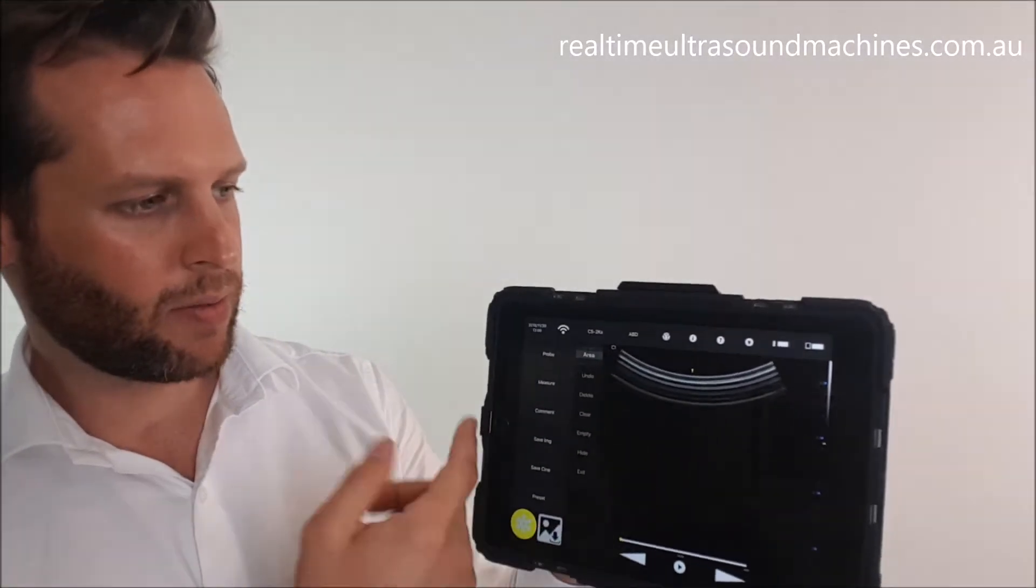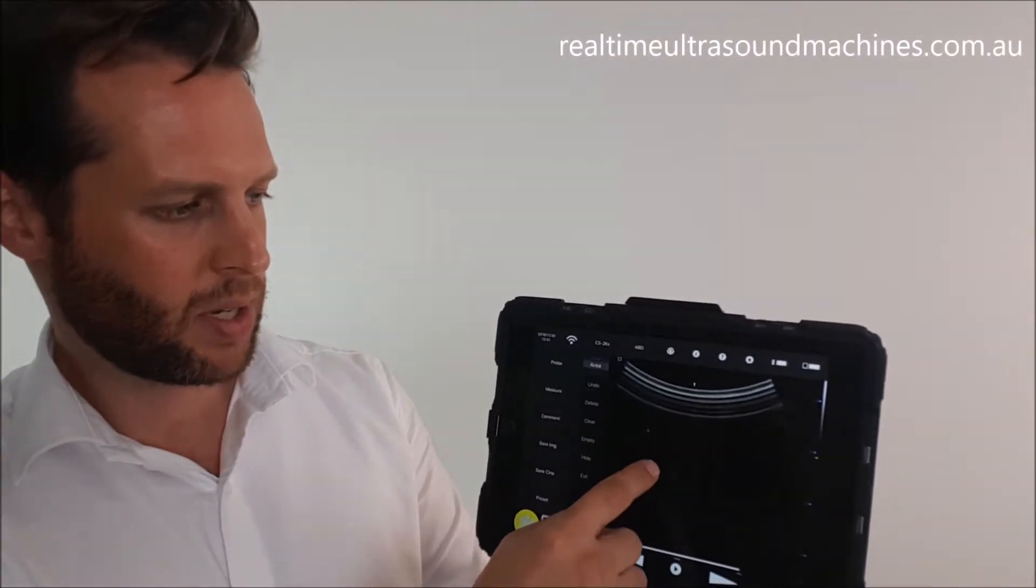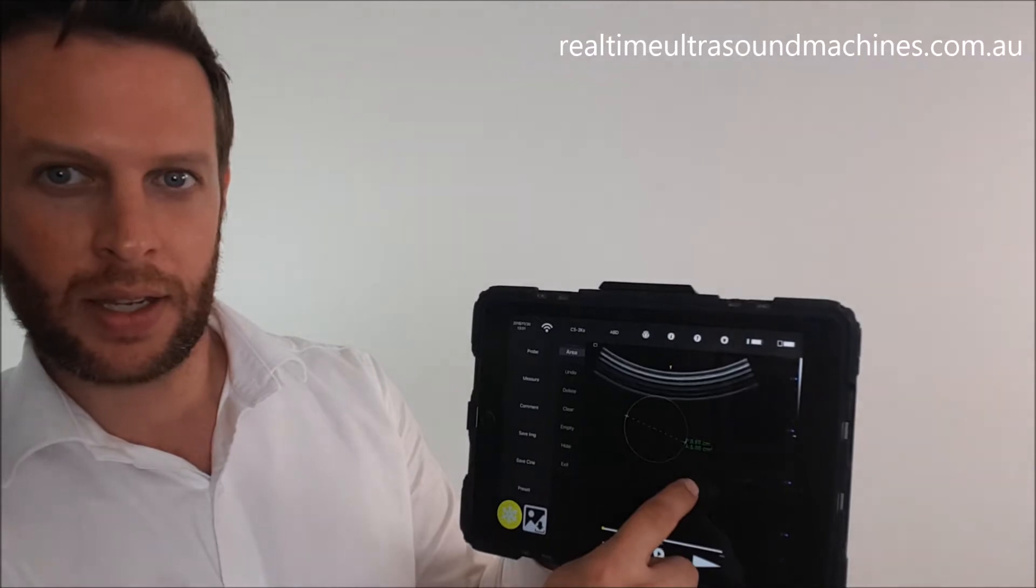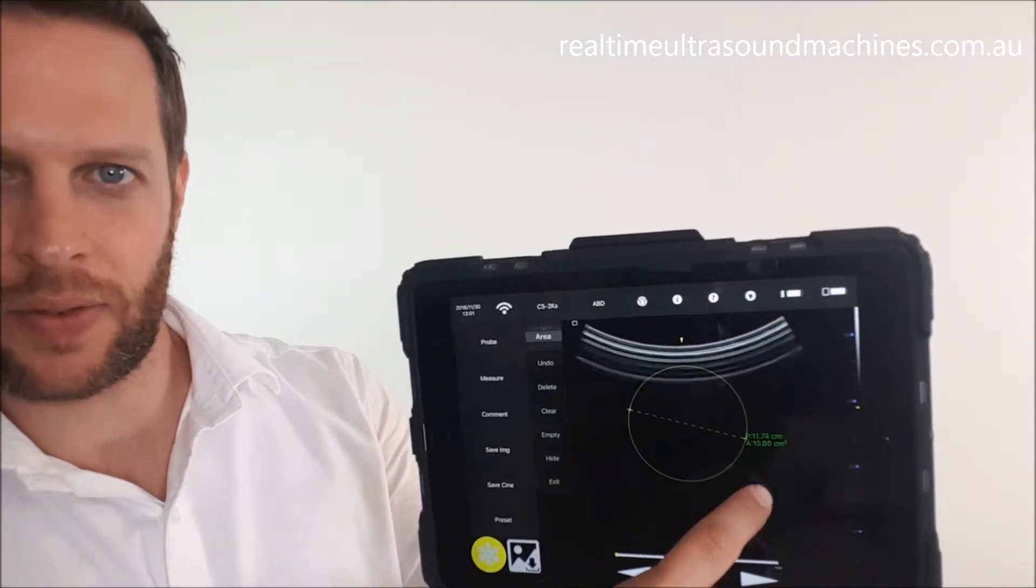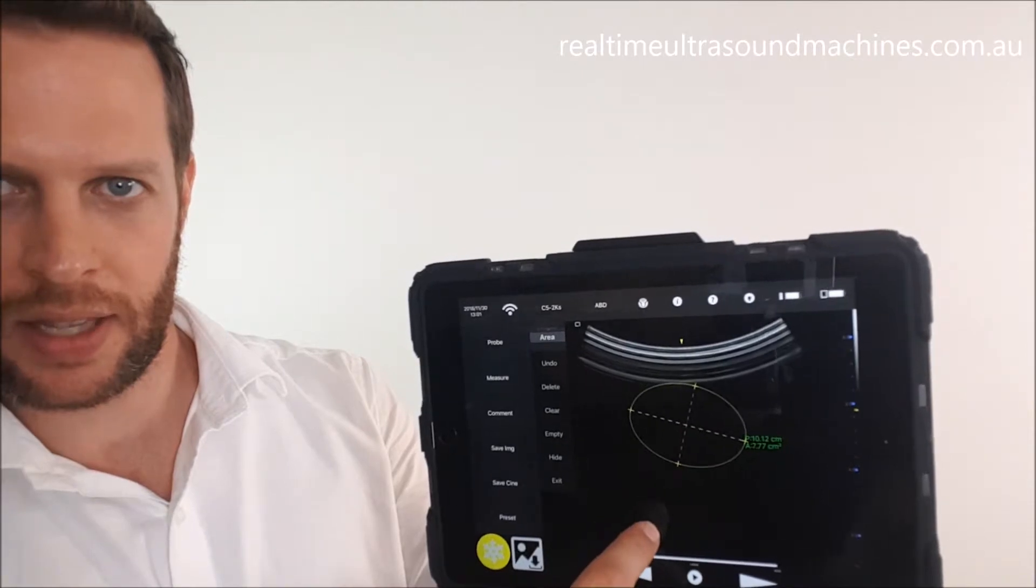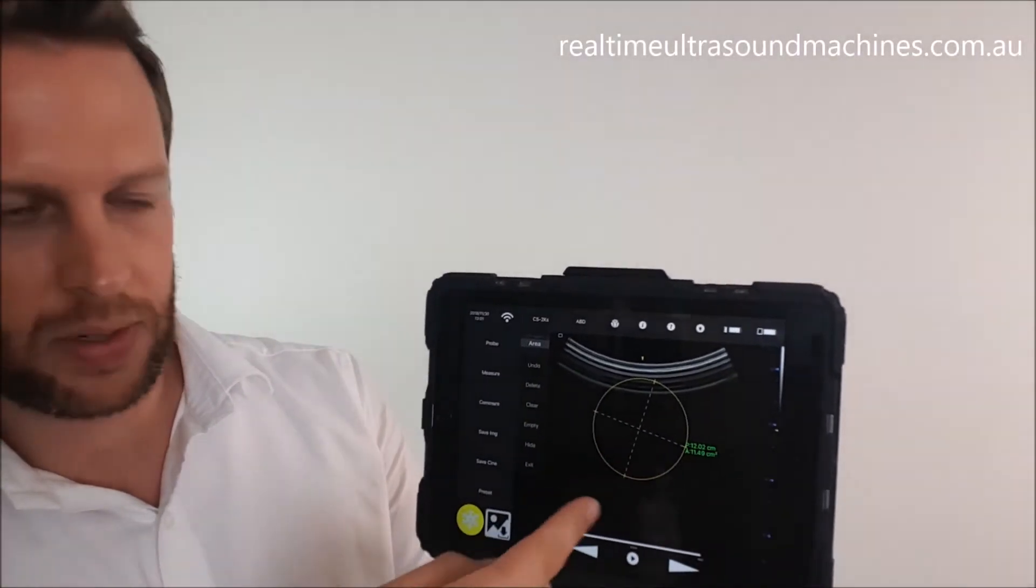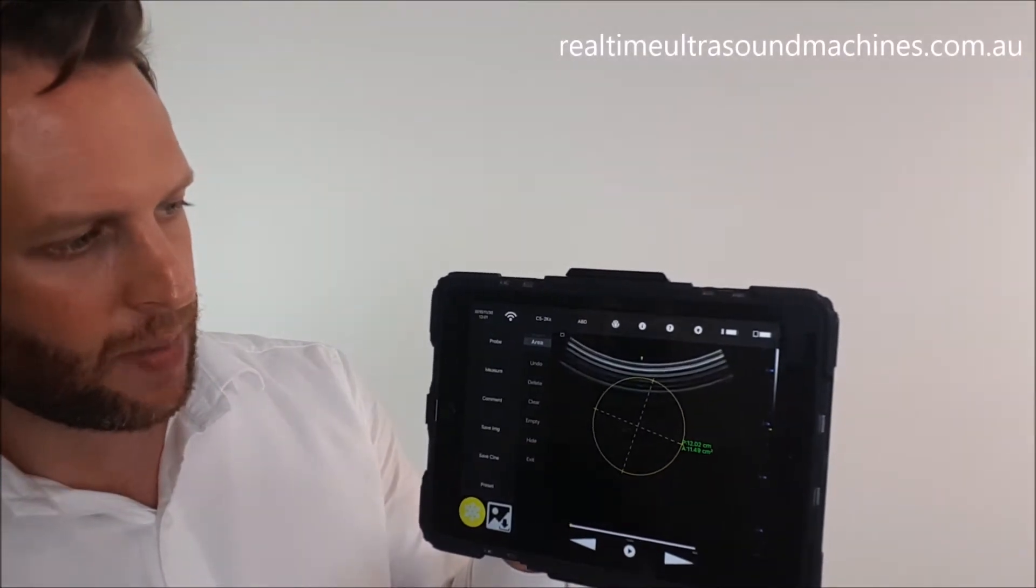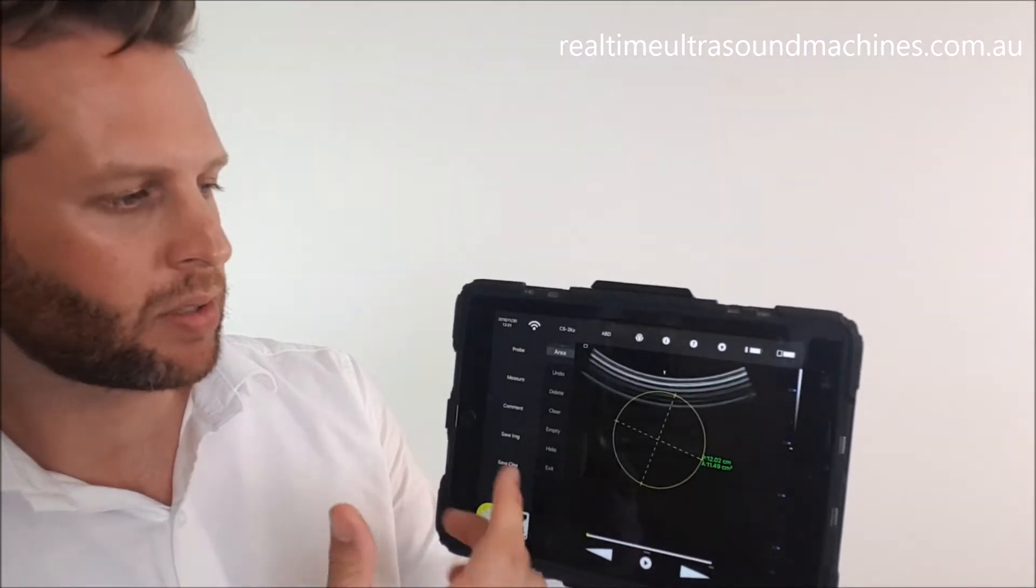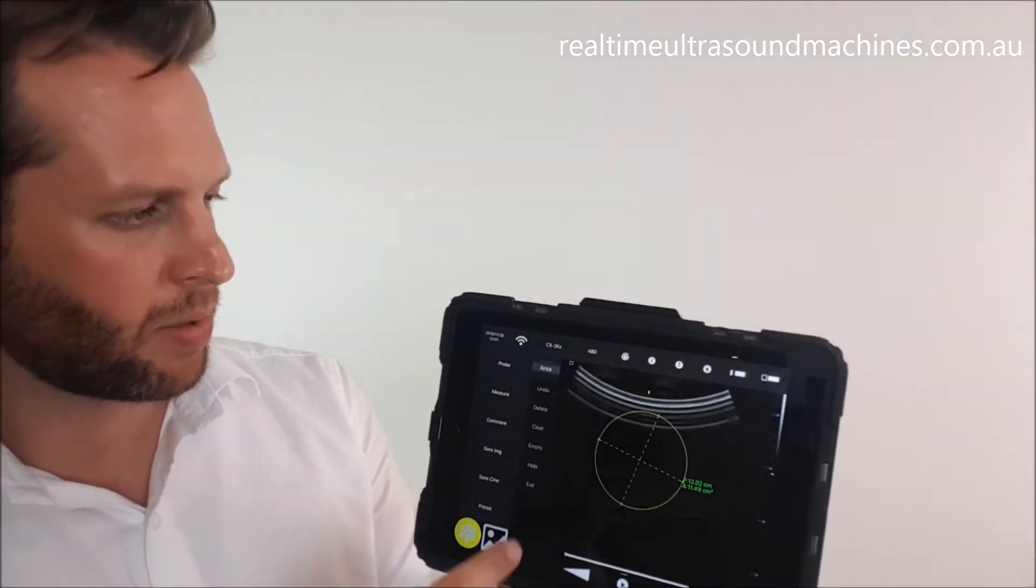If you're doing something like obstetrics, you can use area. All you do is touch the first spot, double-tap, then use your finger to bring out the sphere. Double-tap again and you can adjust the other parameters. What it's going to do is give you the perimeter (which is the circumference) and the area, so you can use the perimeter for things like abdominal circumference or head circumference.